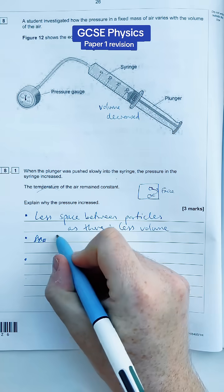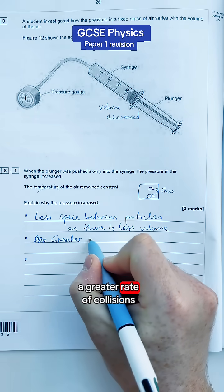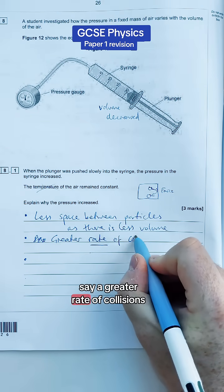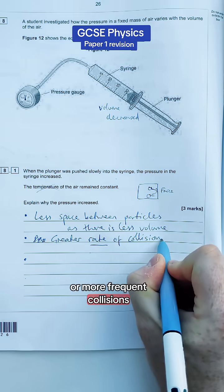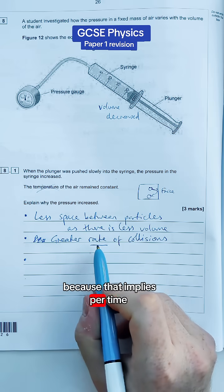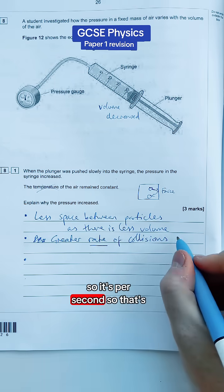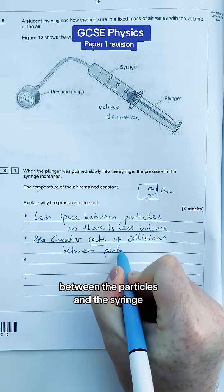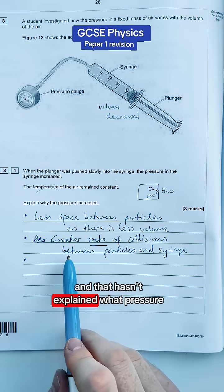And that means there is going to be a greater rate of collisions. Now you can't just say more collisions - say a greater rate of collisions or more frequent collisions because that implies per time so it's per second. So that's between the particles and the syringe and that hasn't explained what pressure is yet.